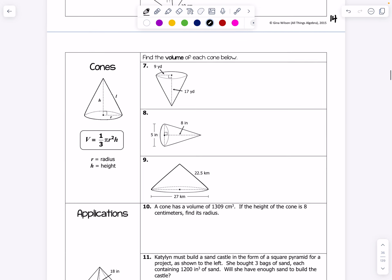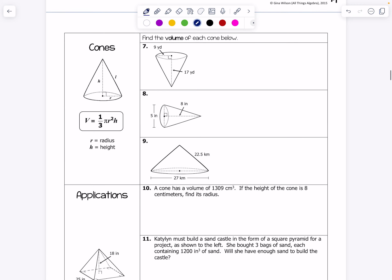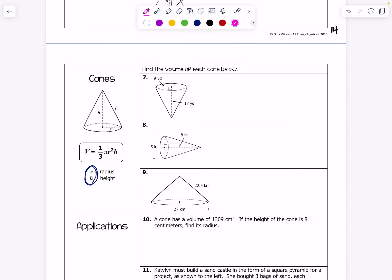All right. And then last section here, we have volume of cones. Okay. So, cones is also fairly straightforward. All you need to know is the radius and the height. And then the rest of it is just formula. Okay. So, looking at seven, we have the radius as nine. And the height here is 17. So, volume is going to be one-third pi radius, which is nine squared, times the height, which is 17. And volume is 1,441.99 yards cubed.